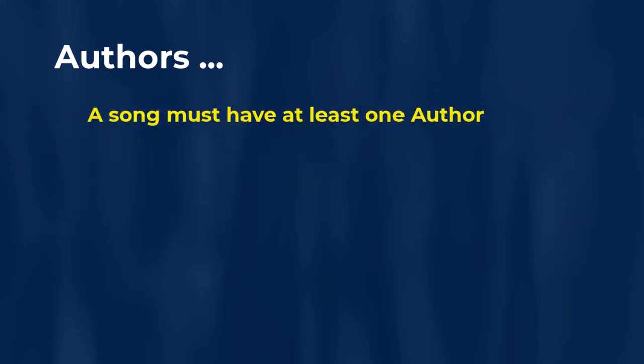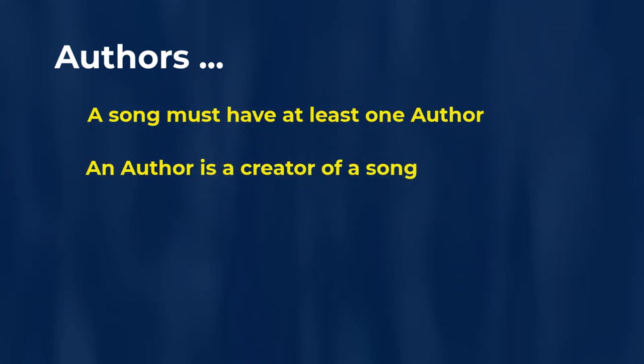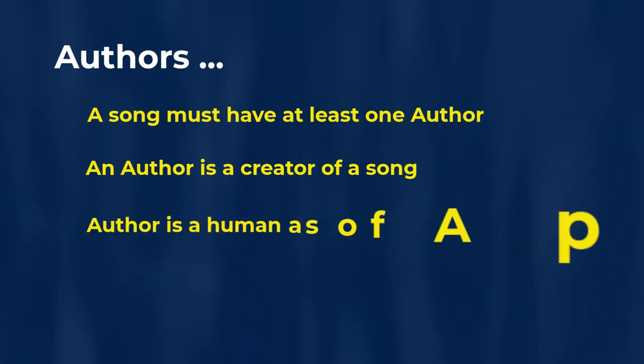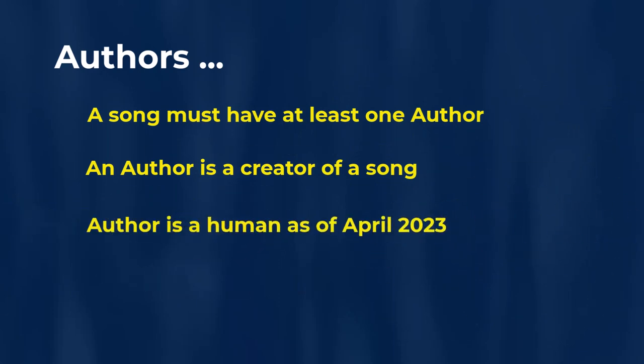Next, we're going to talk about authors in a little bit more detail. A song must have at least one author. An author is a creator of a song. Currently, as of April 2023, an author is always a person, always a human. The law here is a little bit in flux — there are some appeals going on regarding whether or not something can be copyrighted from being generated by AI. In the future, the law may change to consider AI as authors. But for now, as of April 2023, an author is always a person, always a human.